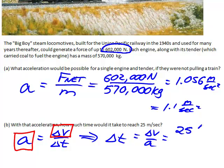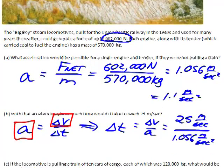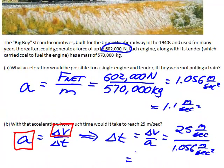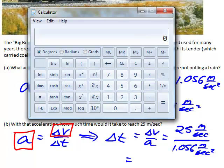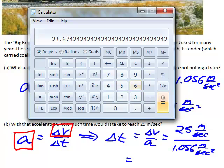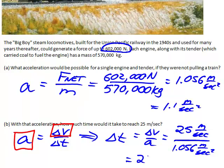So we're going to say 25 meters per second divided by 1.056 meters per second squared. I am carrying the extra sig figs since I had those written down, but in the end I'm going to round to two sig figs again. So we have 25 divided by 1.056 gives us 23.67, which we will round to 24 seconds.